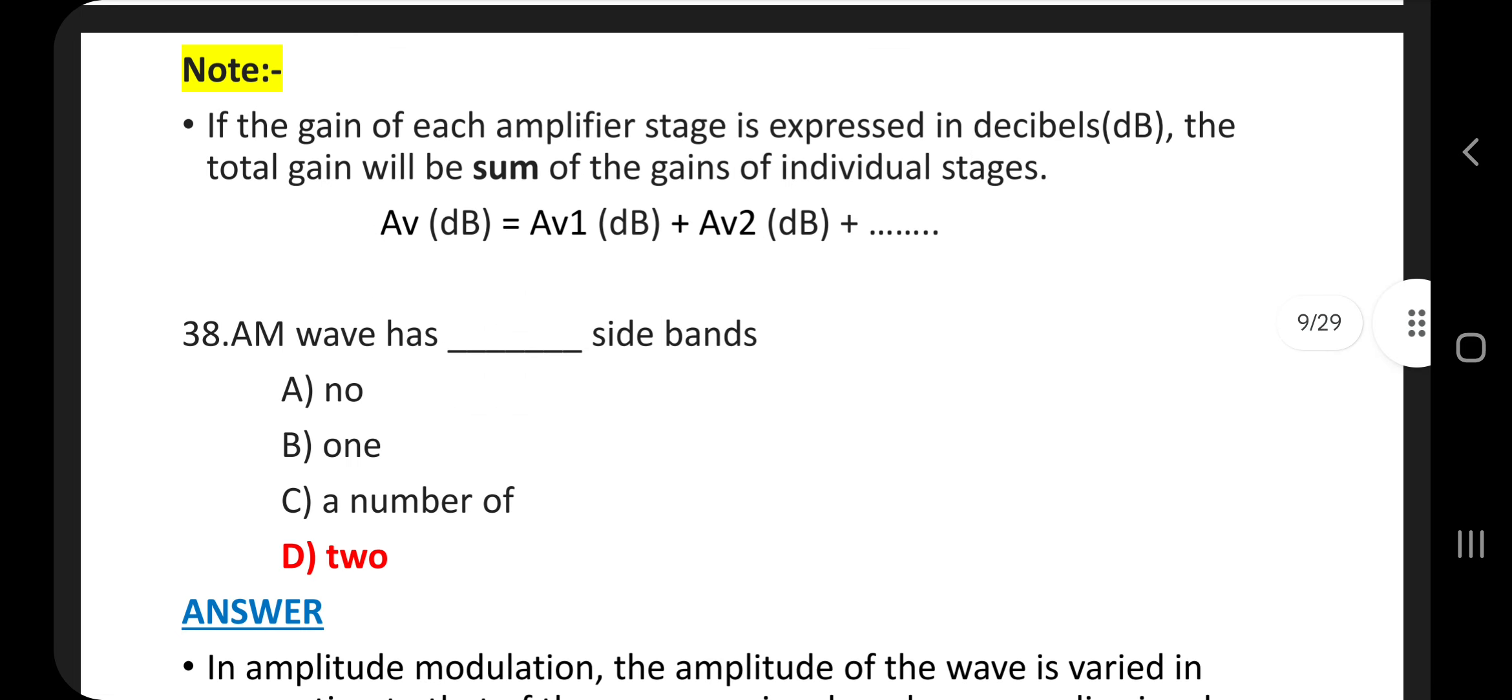Note, if the gain of each amplifier stage is expressed in decibels dB scale, the total gain will be the sum of the gains of individual stages. That is, AV in dB equal to AV1 in dB plus AV2 in dB.